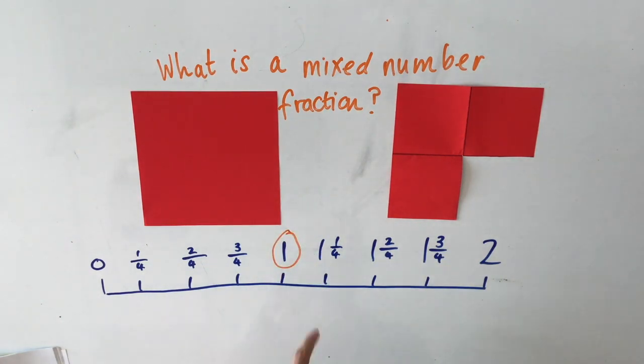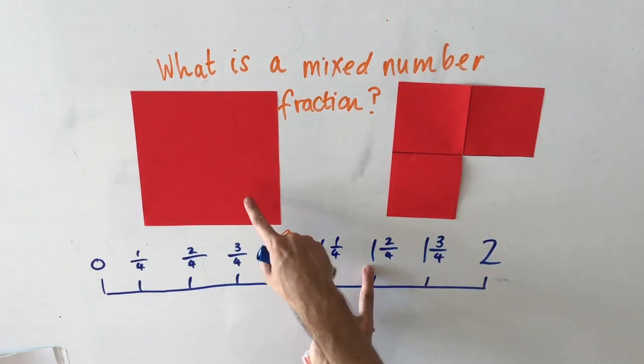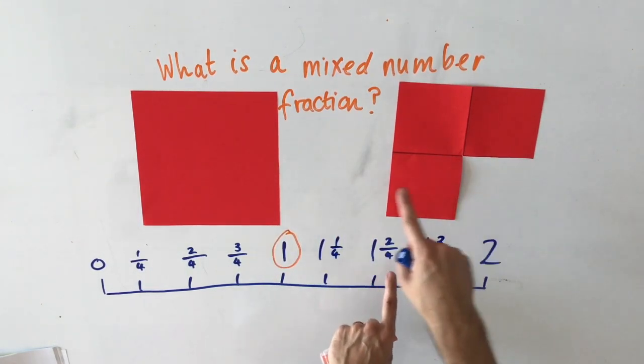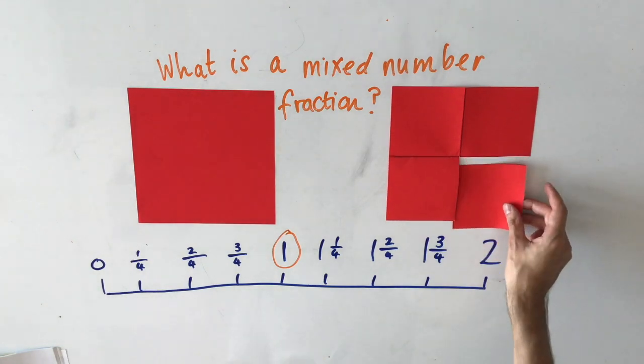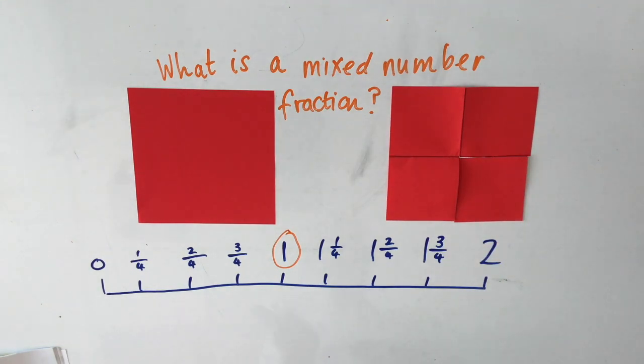Then we have one and one quarter, one and two quarters, one and three quarters, which is what we've got in front of us. But remember, if we added that extra quarter back, we'd have two wholes.